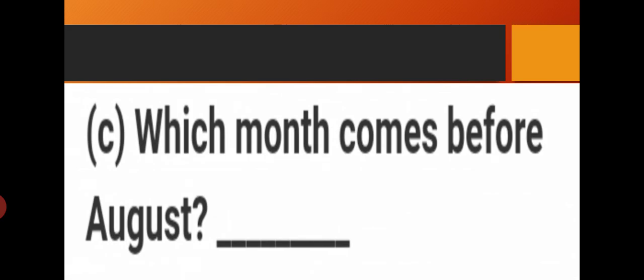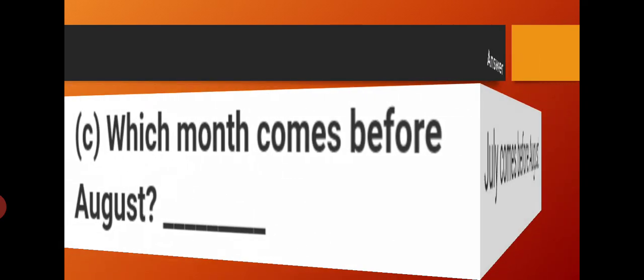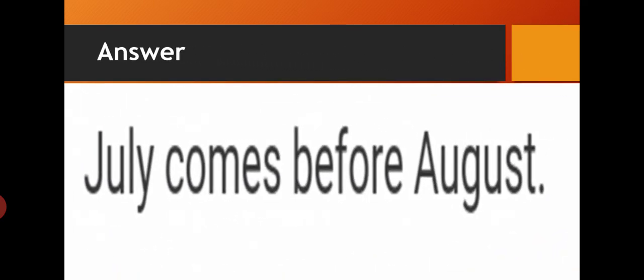Which month comes before August? Before August — start to tell the names: January, February, March, April, May, June, July, August. So which month comes before August? Yes, it is July. July comes before August. Spelling of July: J-U-L-Y. Write down. This is the answer of C.